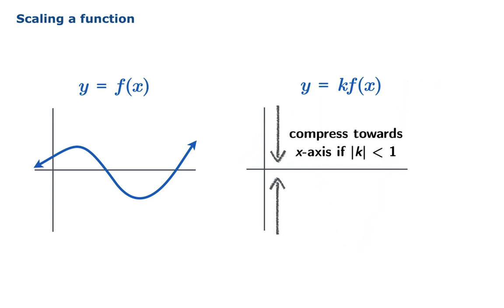If the absolute value of k is less than 1, then you get a compression towards the x-axis. Here's the case where k equals a half. All the function values have been cut in half, basically.